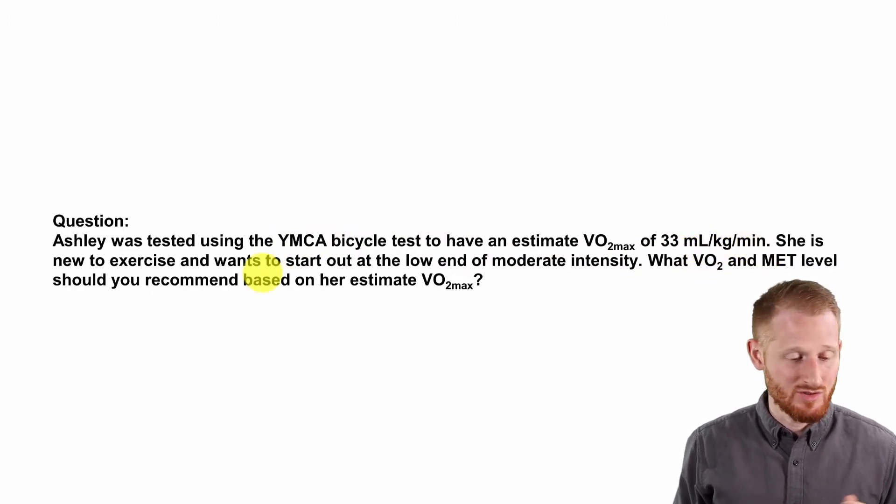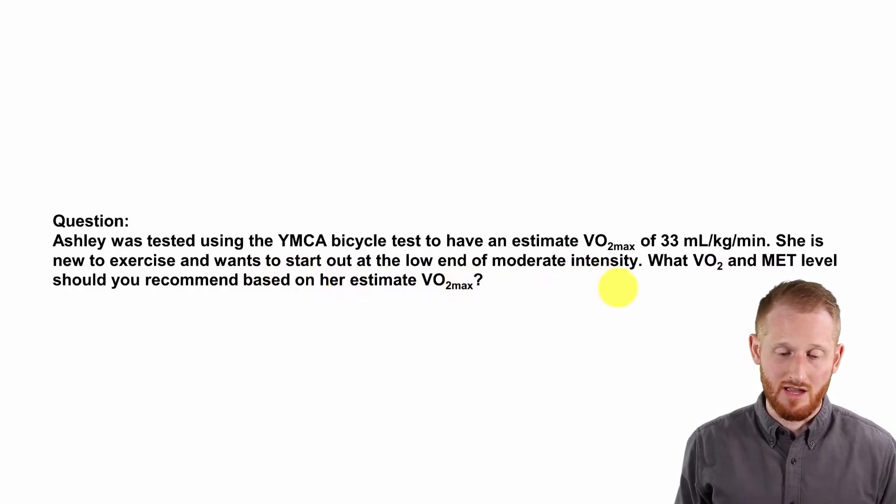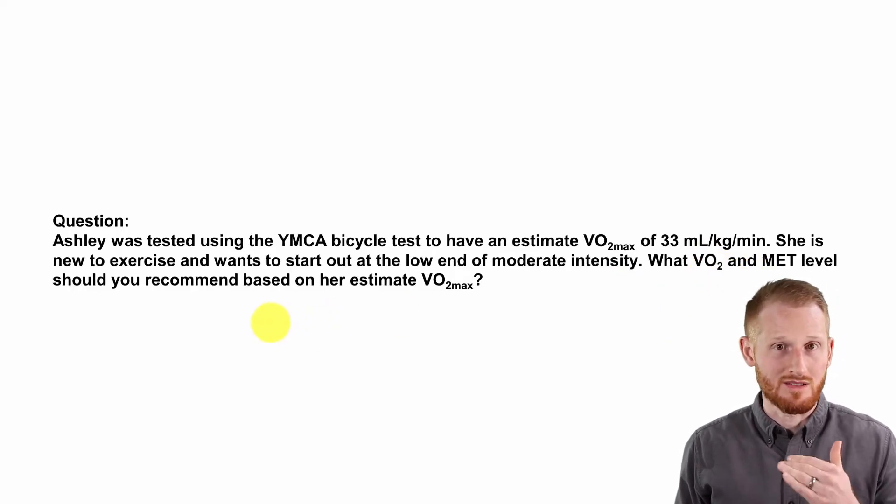And she is new to exercise, so she wants to start out at the low end of the moderate intensity exercise. So what VO2 and MET level should you recommend for her in order to reach the moderate intensity range, but just over that threshold?